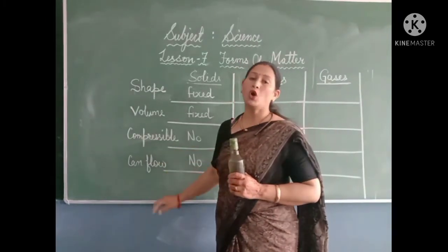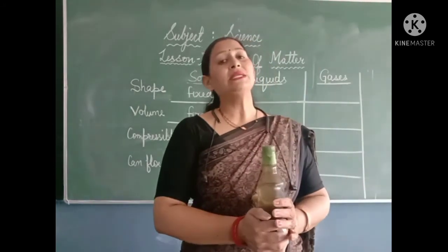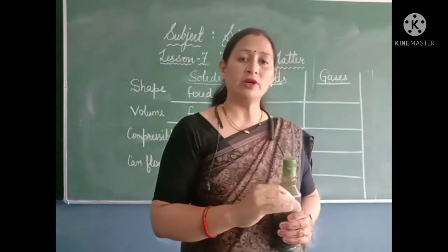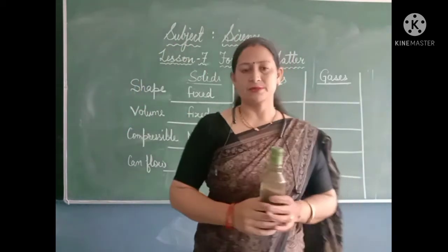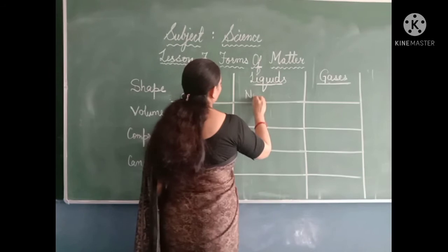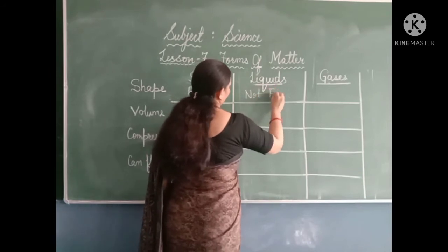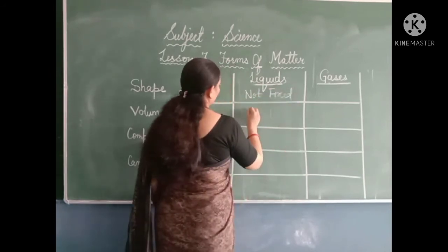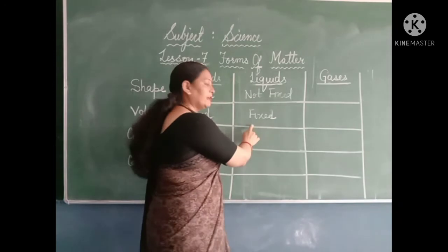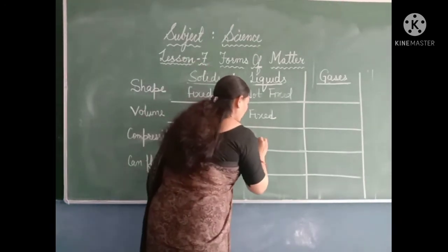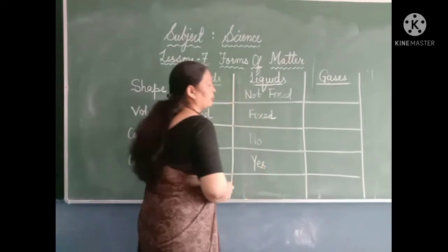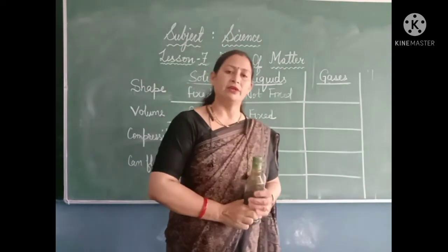The next is can flow or not. Liquids can flow — they flow from a higher level to a lower level. So to summarize for liquids: shape is not fixed, volume is fixed, they are not compressible, and they can flow from a higher level to a lower level.